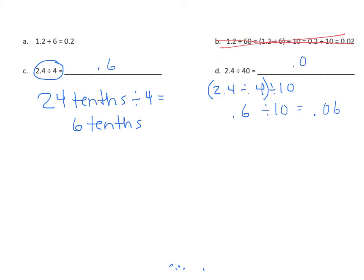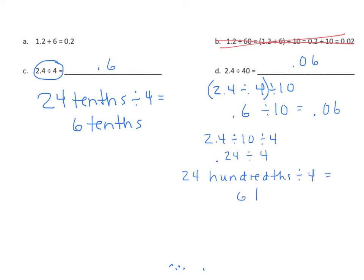We could have done this the other way as well. Starting with 2 and 4 tenths divided by 10, then divided by 4. And 2 and 4 tenths divided by 10 is 24 hundredths, divided by 4. We can change that to unit form: 24 hundredths divided by 4 equals 6 hundredths. We can change that to standard form. Either way, you can see that we get 6 hundredths.